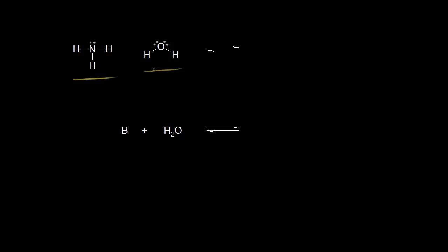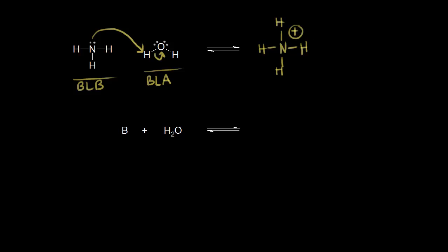Ammonia is a weak base. If ammonia reacts with water, water functions as a Brønsted-Lowry acid, donating a proton to ammonia. Ammonia accepts the proton, acting as a Brønsted-Lowry base. A lone pair of electrons on the nitrogen picks up this proton, which leaves those electrons behind on the oxygen. When you protonate ammonia, you form the ammonium ion, NH4+.